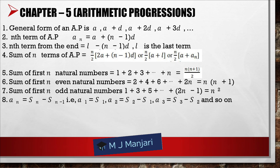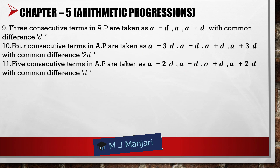Three consecutive terms in an AP are taken as A minus D, A, and A plus D with common difference D. Four consecutive terms in an AP are taken as A minus 3D, A minus D, A plus D, and A plus 3D with common difference 2D.